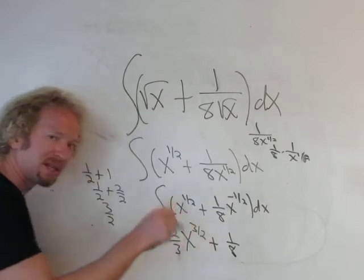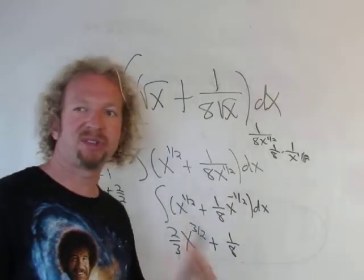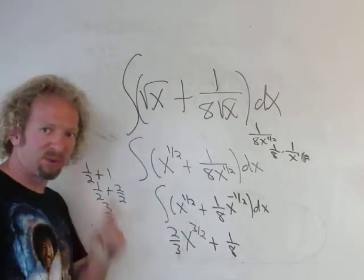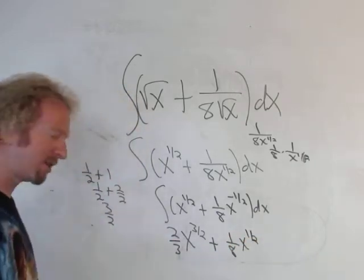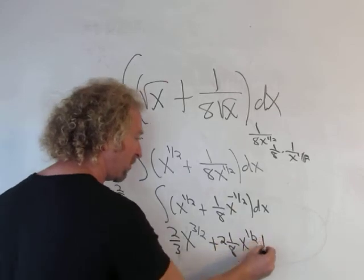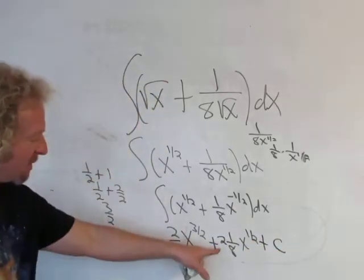And again, adding 1 to negative 1 half. So 1 plus negative 1 half, that's going to be 1 half. So x to the 1 half. And when we divide by 1 half, we really multiply it by the reciprocal, so 2 plus c. The last thing to do is maybe clean up this number.